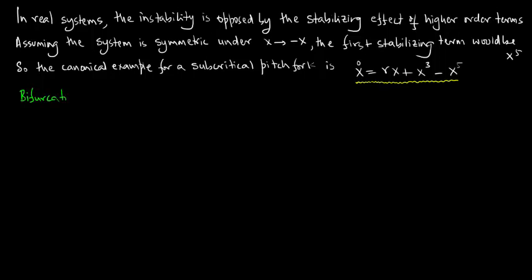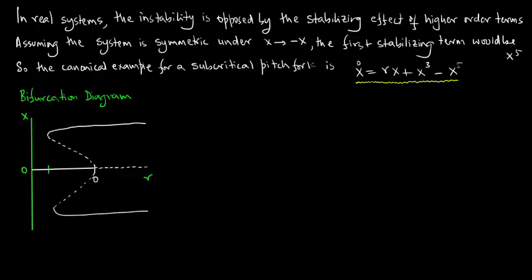And now we plot the bifurcation diagram for the subcritical pitchfork. We plot x versus r and it turns out to be quite an interesting looking bifurcation diagram. As is customary the straight lines are stable and the dotted lines are unstable branches.